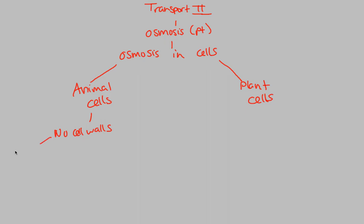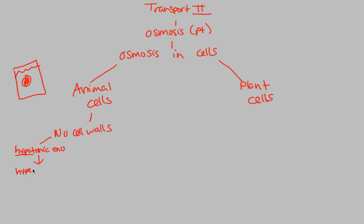Imagine that you have an animal cell and you put it in a hypotonic environment. A hypotonic environment means the environment has lots of solvent, lots of water, and a little bit of solute — a very watery environment. The cell in relation to that environment is going to be hypertonic to the watery hypotonic environment. So simply put, we have a hypotonic environment with a hypertonic cell. Something's got to give — we have to have equilibrium established and concentration gradients followed.